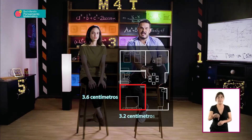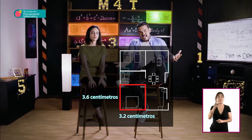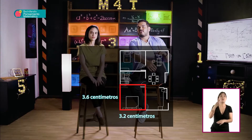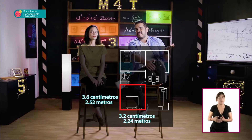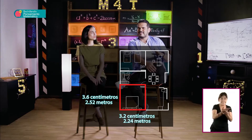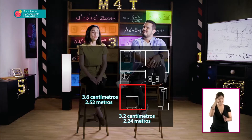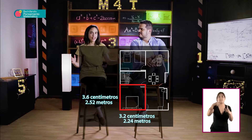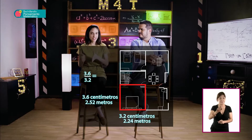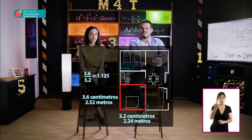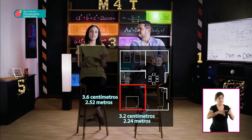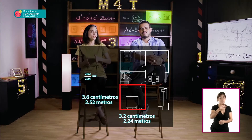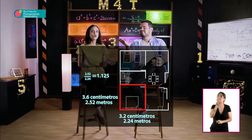Por ejemplo, si tenemos el plano de un dormitorio que mide 3.6 por 3.2 centímetros, en la casa real el dormitorio mide 2.52 metros por 2.24 metros. Pero no conocemos la escala del mapa. ¿Se hizo la casa de acuerdo con las especificaciones del plano? Para eso, vamos a dividir el tamaño de las paredes del plano: 3.6 entre 3.2 es igual a 1.125. Hacemos lo mismo con las paredes de la casa real: dividimos 2.52 entre 2.24 y obtenemos el mismo resultado: 1.125.